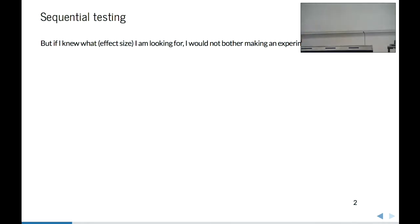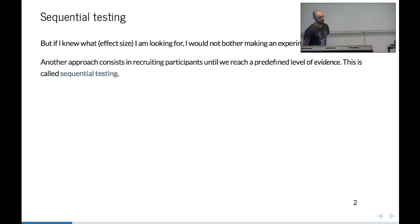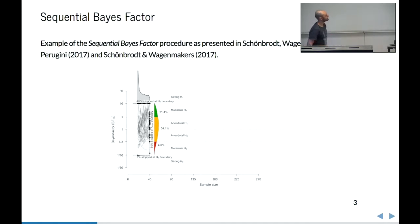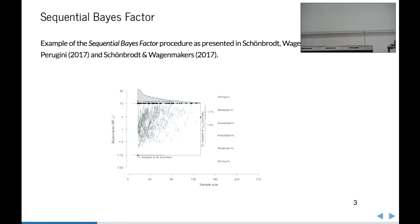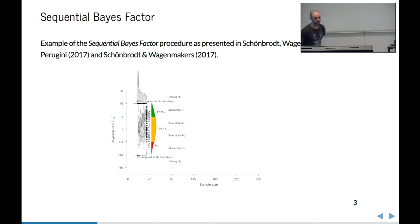But this method requires you to have at least a rough idea of the effect size you're looking for. But if you knew what effect size you were looking for, maybe you would not bother making an experiment at all. So another approach consists in recruiting participants and accumulating observations until you reach a predefined level of evidence. But this requires that we have a way of quantifying evidence.